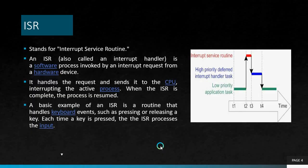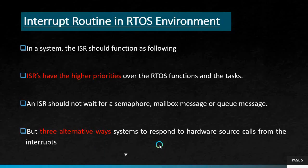In an RTOS environment, the ISR should function as follows: ISRs have higher priorities over RTOS functions and tasks. An ISR should not wait for a semaphore, mailbox message, or queue message. There are three alternative ways for systems to respond to hardware source calls from interrupts.